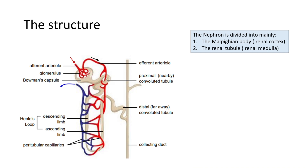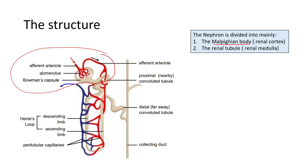The nephron is a coiled structure and there are millions of them in the kidney — they are the ones that actually filter the blood. The nephron can be divided into two main parts: the Malpighian body, which is the top part, and the renal tubule, which is the bottom part.